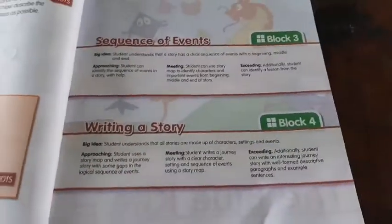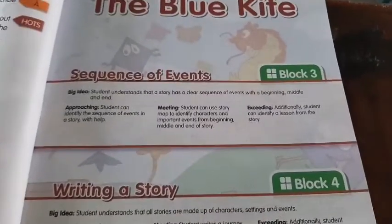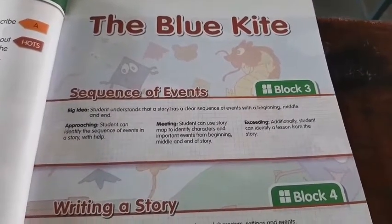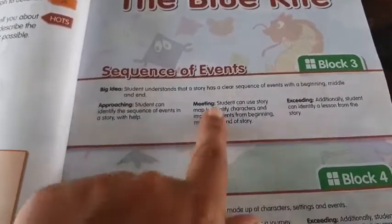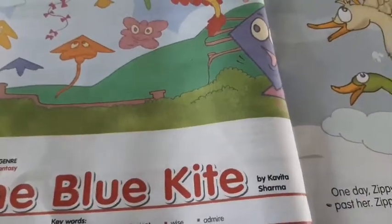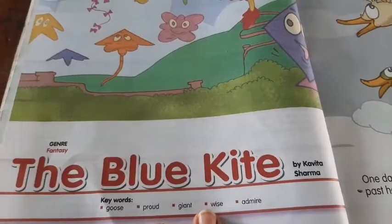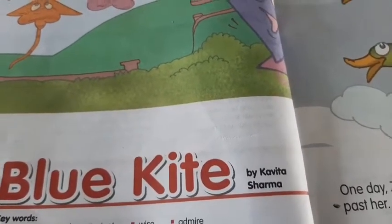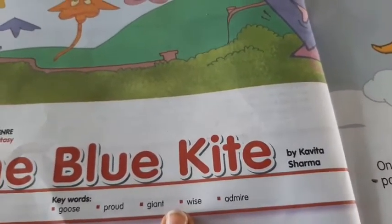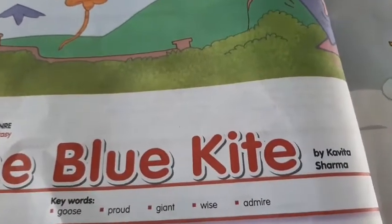Turn to the page. See what you can see here children — Block 3: The Blue Kite. What will you study in this? We will study the sequence of events. Who wrote this story? Who is the author? Kavita Sharma. She is the author of this story. Author means she wrote the story.